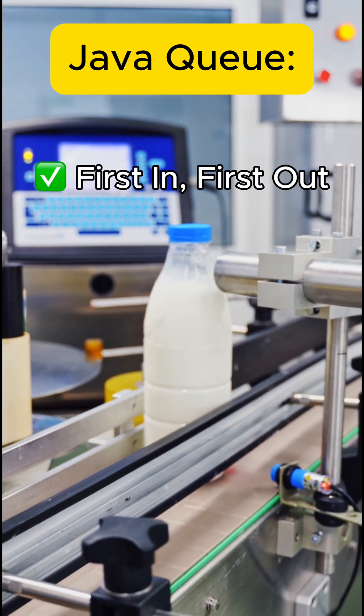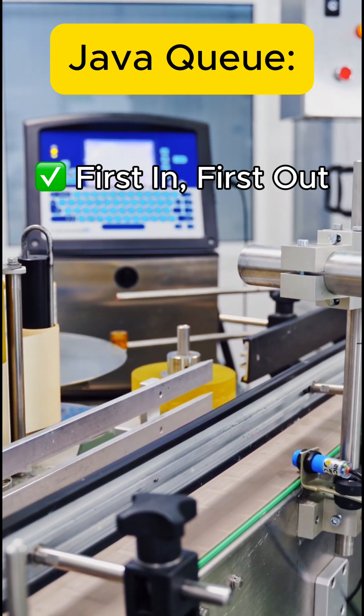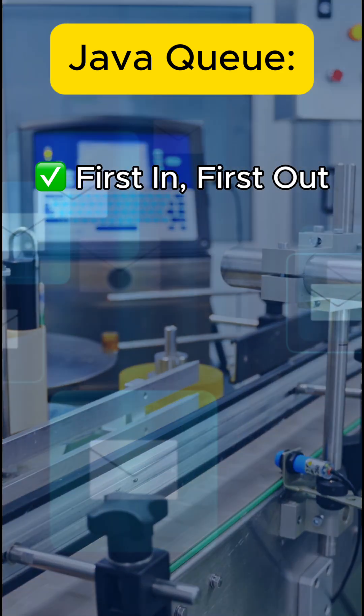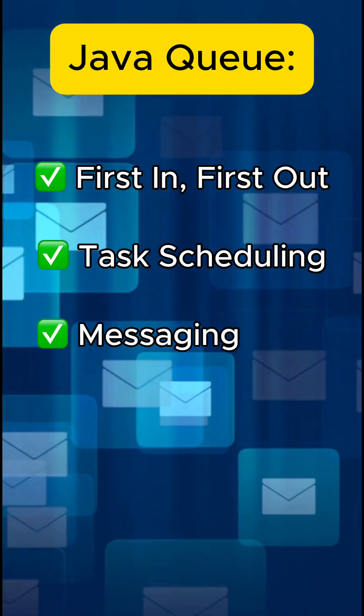Finally, queue. A queue is your go-to when you want to process elements in order, typically first in, first out. It's often used in task scheduling, messaging systems, or buffering data.